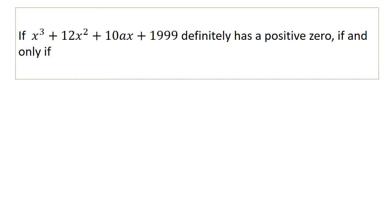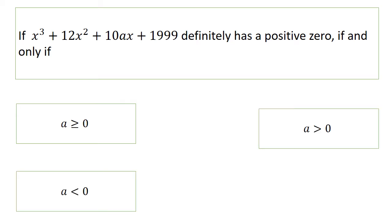Next question: if x³ + 12x² + 10ax + 1999 definitely has a positive zero, if and only if... See, the condition for this polynomial x³ + 12x² + 10ax + 1999 definitely has a positive zero, then what's the condition for a? a ≥ 0, a > 0, a < 0, or a ≤ 0?